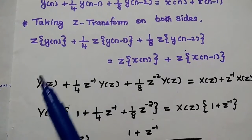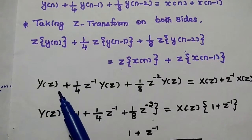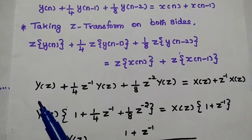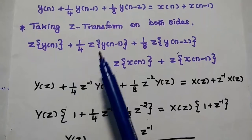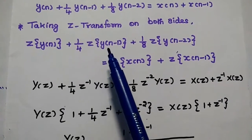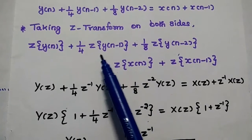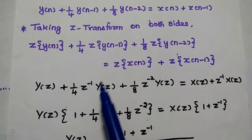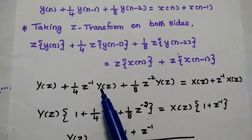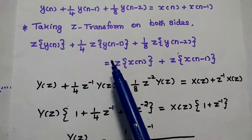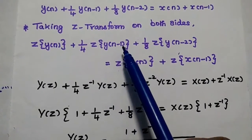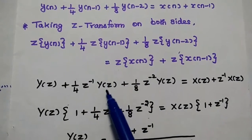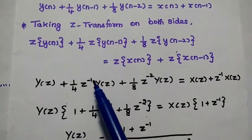Z-transform of y(n) is equal to capital Y(Z), which represents the frequency domain signal — the transformed signal. For the term 1/4·y(n-1), we use the time delay property of the Z-transform: Z-transform of y(n-1) is equal to Z⁻¹·Y(Z), that is one delay, so we multiply Y(Z) with Z⁻¹.